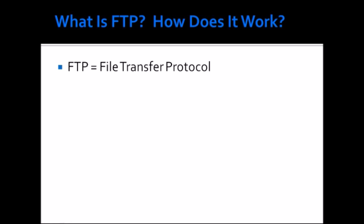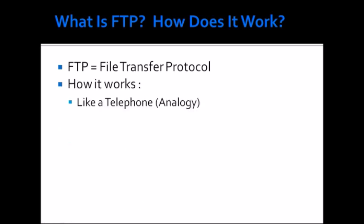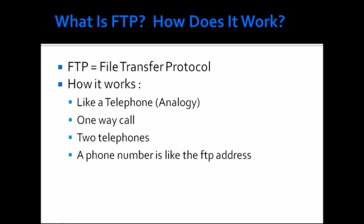I thought about how I can make this easy to understand if you don't really know how it works. It's sort of like a telephone. To make a one-way call, you need two telephones — telephone A and telephone B. You also need their phone numbers. Telephone A dials telephone B's number, and at that point it connects. FTP works the same way — you have a computer uploading files to a server, or downloading files from a server to a PC, or from a server to a server — basically a computer machine to a computer machine.